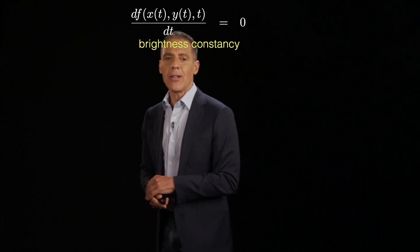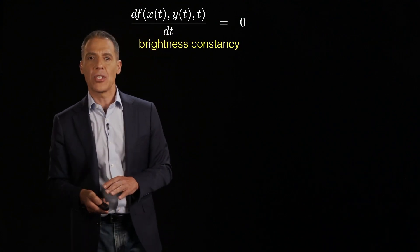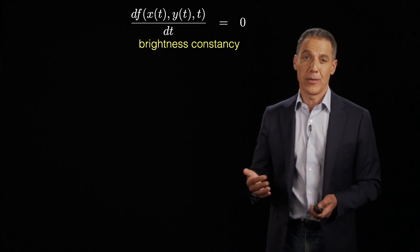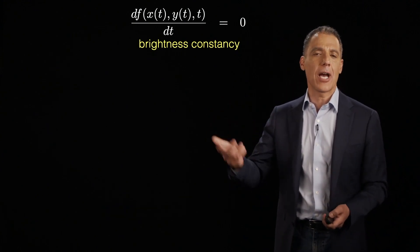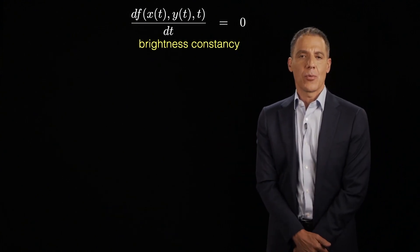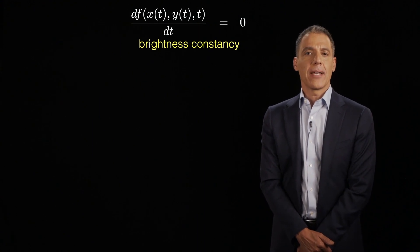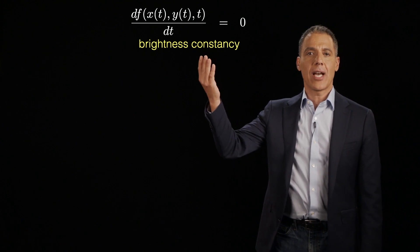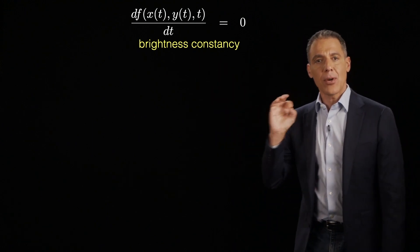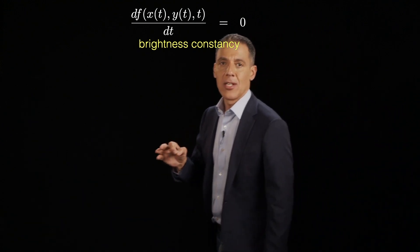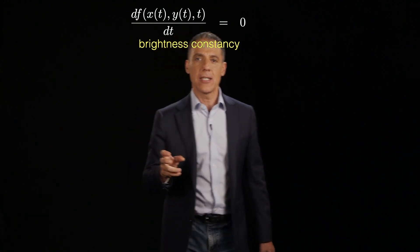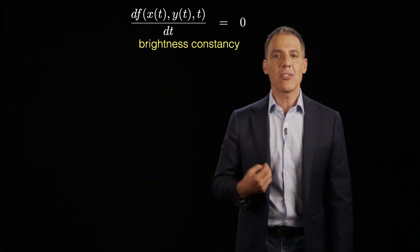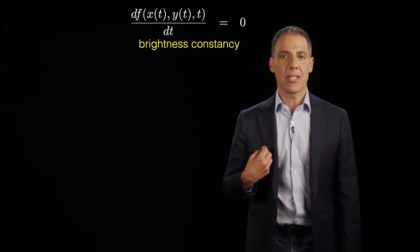We're going to start with differential motion and we'll eventually get back to feature tracking. Now, we've already got some intuition as to how we're going to compute differential motion. Because we've already talked about derivatives in the context of spatial derivatives. We're just going to add a time dimension. And the way we're going to derive this is we're going to start by making some assumptions. We're going to assume the so-called brightness constancy assumption.